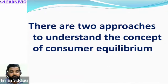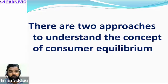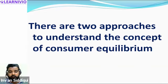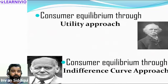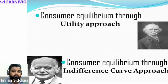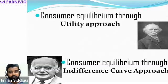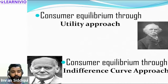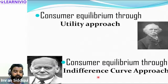Both economists gave different theories for consumer equilibrium. Alfred Marshall gave the utility approach, and J.R. Hicks and Allen gave the indifference curve approach. So basically, when considering approaches to consumer equilibrium, there are two: one as per Professor Alfred Marshall — the utility approach — and the other according to J.R. Hicks and Allen — the indifference curve approach.